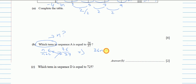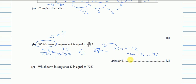Cross-multiplying gives: 37n = 36(n + 2), which expands to 37n = 36n + 72. Subtracting 36n from both sides: 37n - 36n = 72, so n = 72. The 72nd term gives the value 36/37.